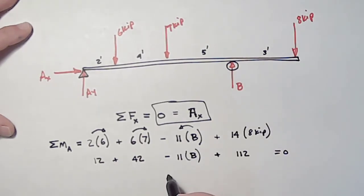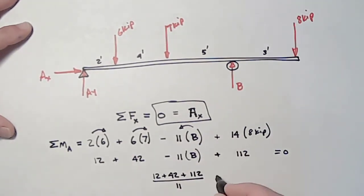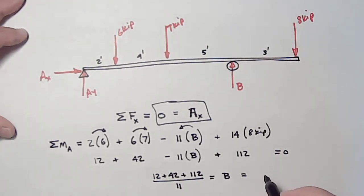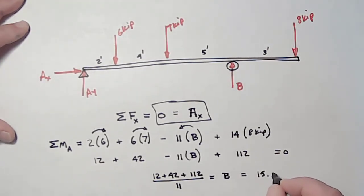So, in this case, I add everything up. I will take the eleven B, move it on the other side of the equal sign. And I will get twelve plus forty-two plus one one two divided by eleven equals B. I jumped a couple steps there, but I immediately can see that B is 15.091 kips.